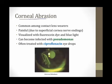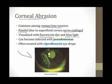A corneal abrasion is also common among contact lens wearers and is often painful because the superficial cornea has lots of nerve endings. You can visualize a corneal abrasion using a dye called fluorescein and a blue light. A high-yield fact for Step 1 is that corneal abrasions can become infected with Pseudomonas, and for this reason the problem is often treated with ciprofloxacin eye drops — a fluoroquinolone antibiotic with good activity against Pseudomonas.